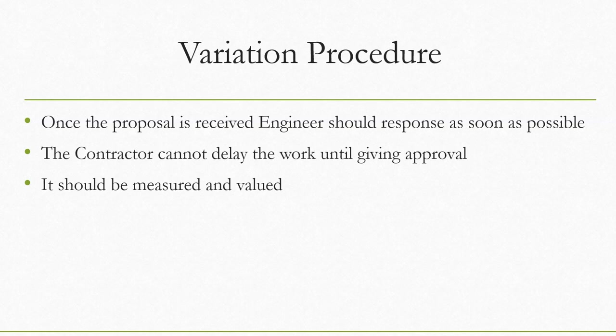If the engineer instructs to go ahead with the variation, after finalizing the design, the contractor submits a cost proposal and a revised programme. As per the contract document, you need to submit the cost proposal as soon as you receive the instruction. However, even though you have submitted the cost proposal, you cannot wait for it to be approved before starting work. Without approval, you have to start the work — you cannot say your proposal has not been approved and therefore you won't proceed.